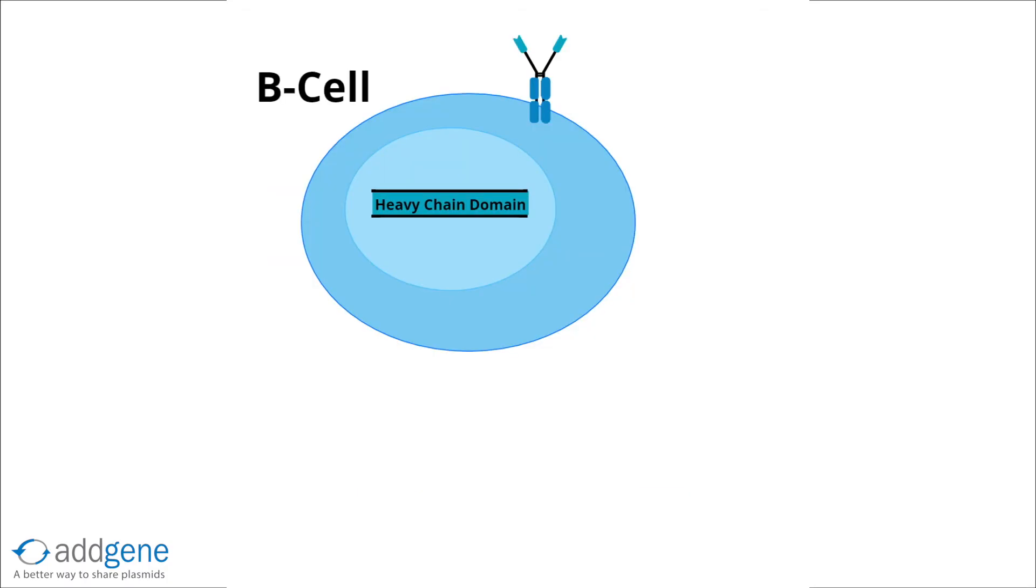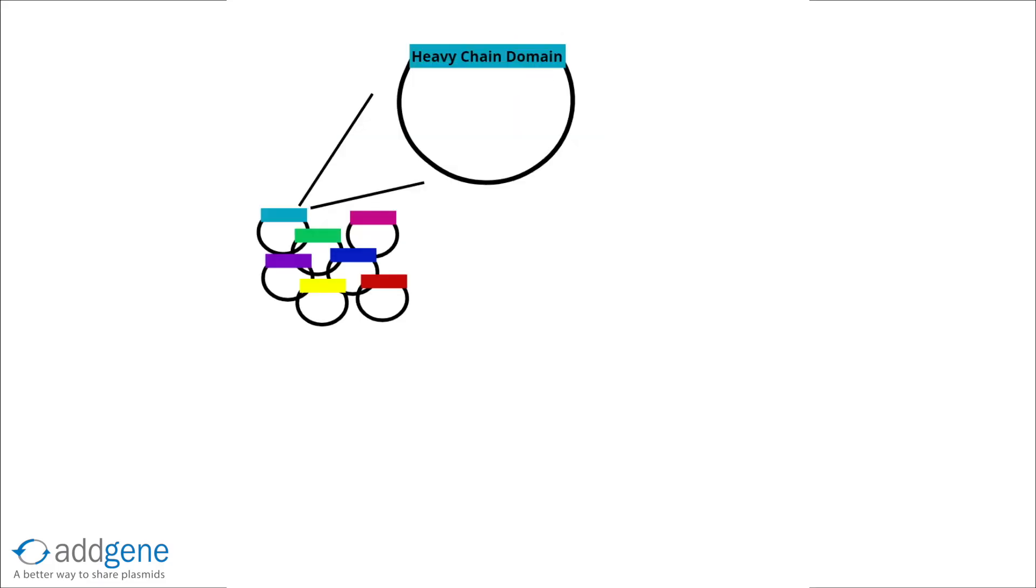Then, the HCAB heavy chain domain genes of these B cells are cloned into plasmids. These plasmids, collectively called immune libraries, are used to express the camel's nanobodies in experiments which identify nanobodies that have high affinity for the antigen of interest.